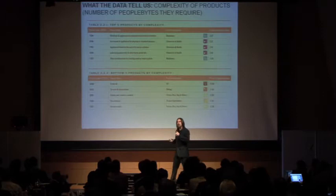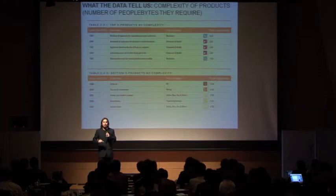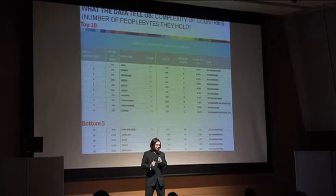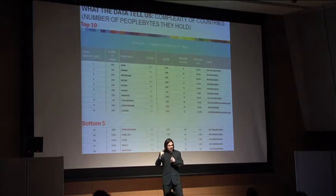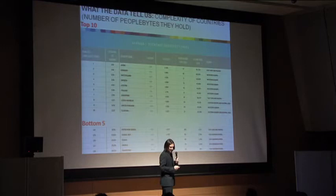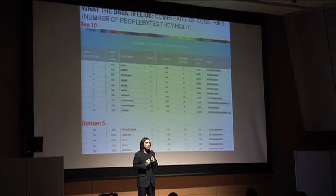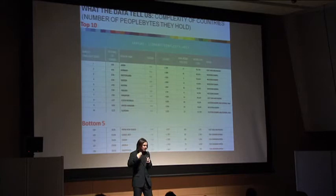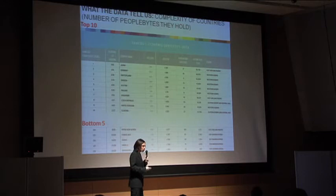Now we ask the opposite question: which are the countries that have more person bites and which have less? When we do this calculation, we find that Japan is number one — Ichiban. Germany is second — Niban. Switzerland is third — Sanban. And Sweden is fourth — Yonban. Japan appears to be the number one country in the world according to this measure — the most sophisticated when we look at what it's produced and the things that countries make, not how much they make.